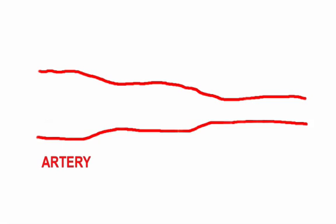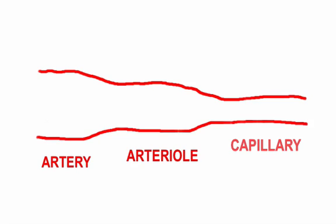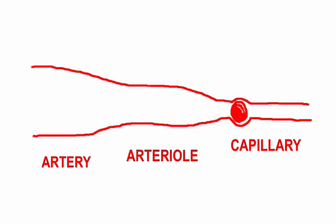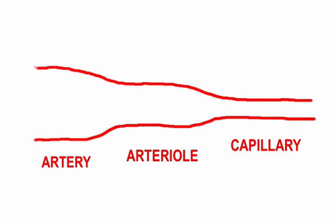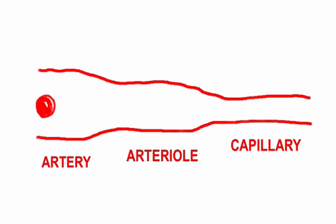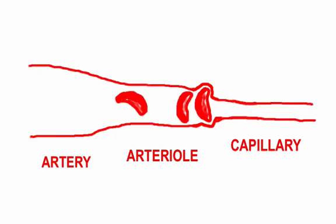What you see is a rough drawing of a section of your cardiovascular system. The artery narrows down to become an arteriole, which narrows down to become a capillary. The nice oval shape of a red blood cell easily passes through this narrowing channel. However, when the red blood cell changes from oval to sickle, it gets stuck.